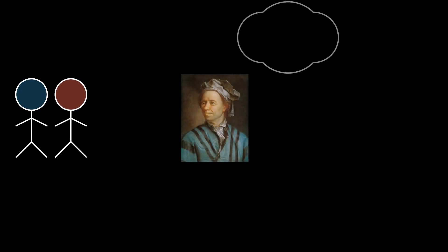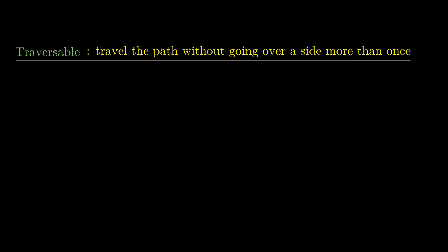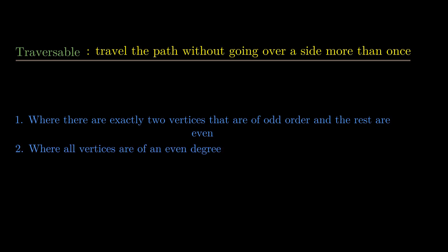Well, for Euler, it did. He brought forward an idea that in a network, for a path to be traversable, which is to be able to travel the path without going over a side more than once, you can have two conditions. One, where there are exactly two vertices that are of an odd order and the rest are even order. Two, where all the vertices are of an even order.